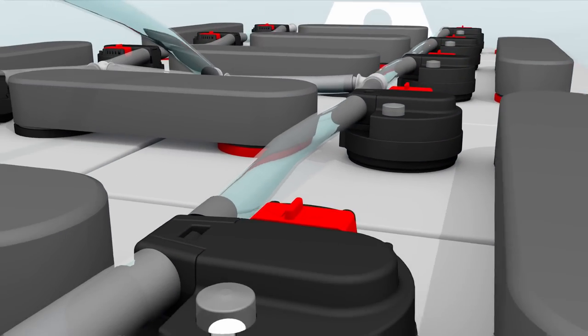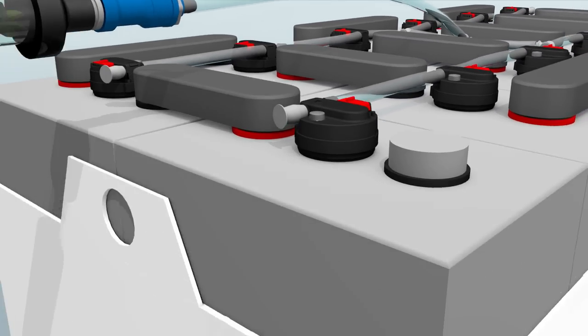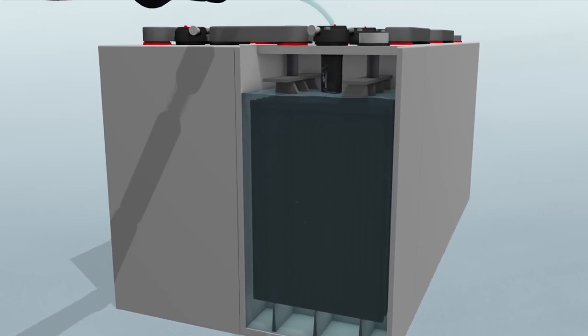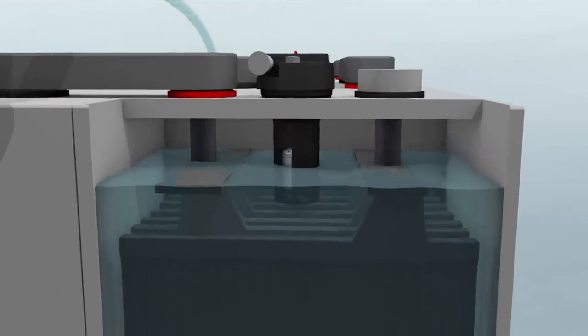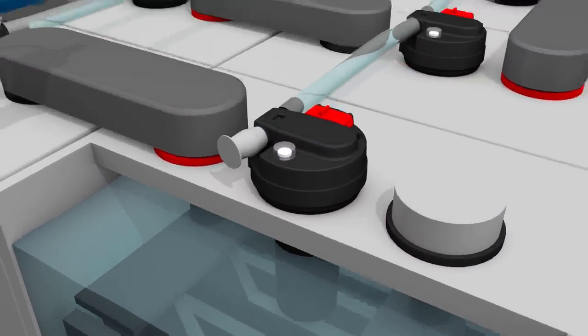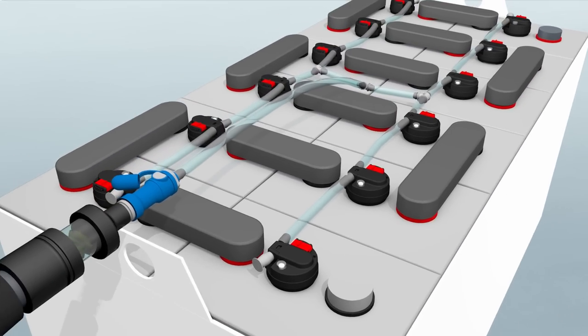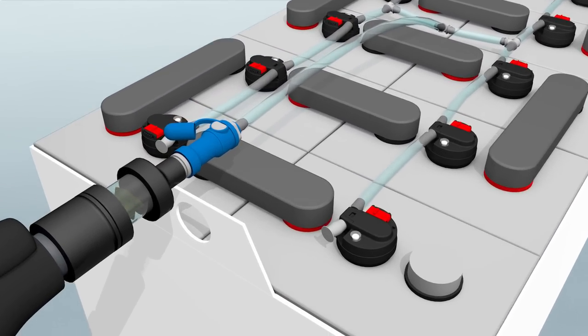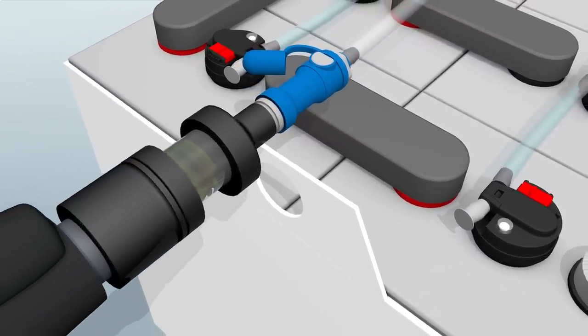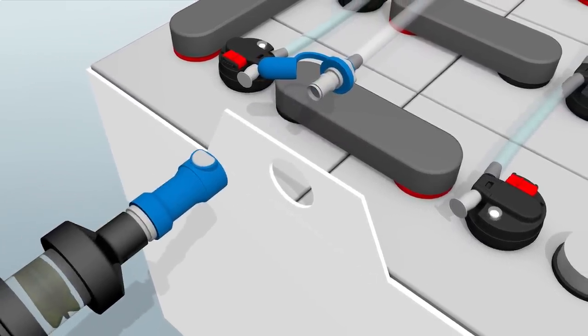The water enters our simple-looking but technology-packed valves and each cell begins to fill. As they reach the ideal level, the water raises the encapsulated floats and pops the indicator eyes into place. You can see those things from a mile away. When all the cells are full, the water automatically stops flowing. Now just unplug and move on to the next battery.